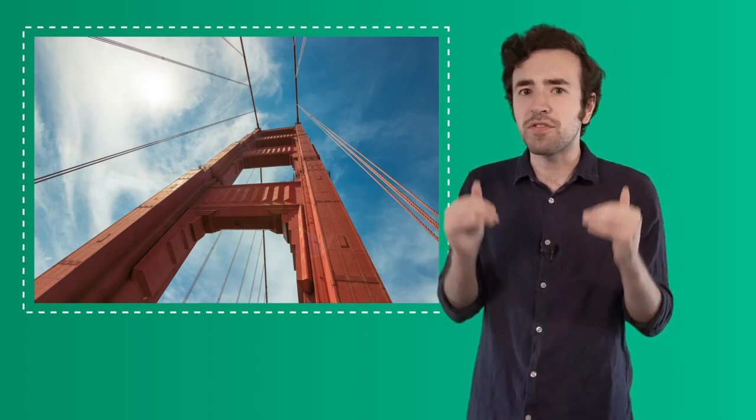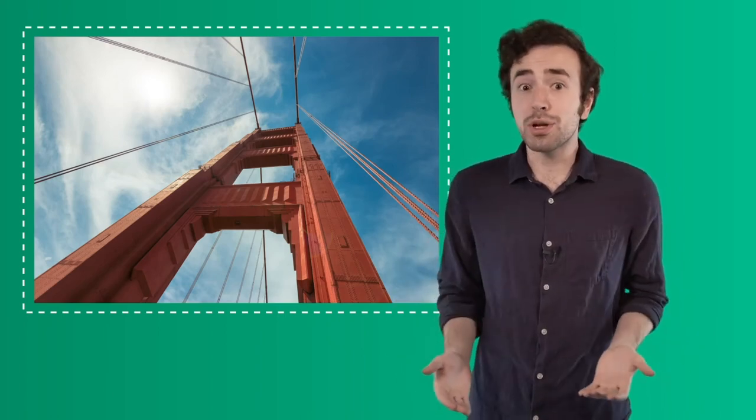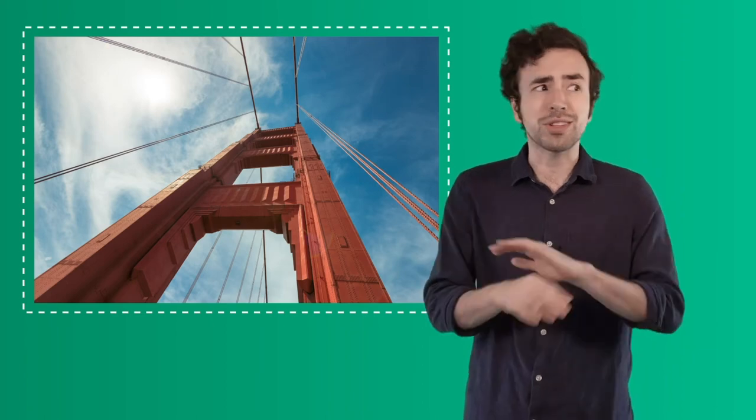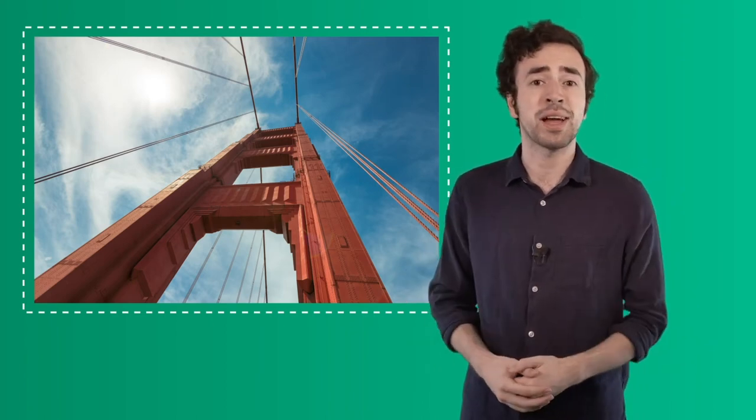The Golden Gate Bridge was the longest suspension at the time of its building, and it held that title for almost 30 years. The Golden Gate Bridge is two miles long and about 90 feet wide. The towers themselves are 750 feet tall. The Golden Gate Bridge was actually the tallest bridge of any kind until 1993.